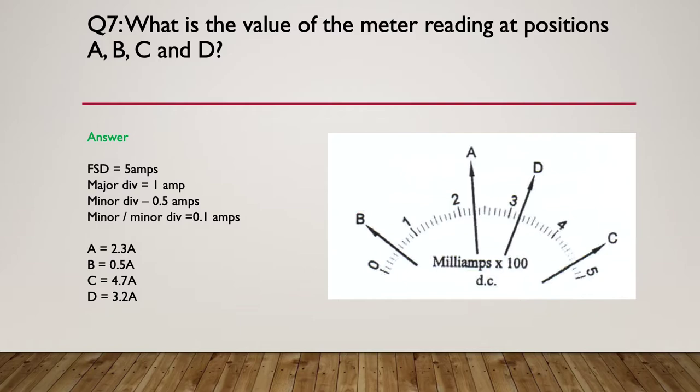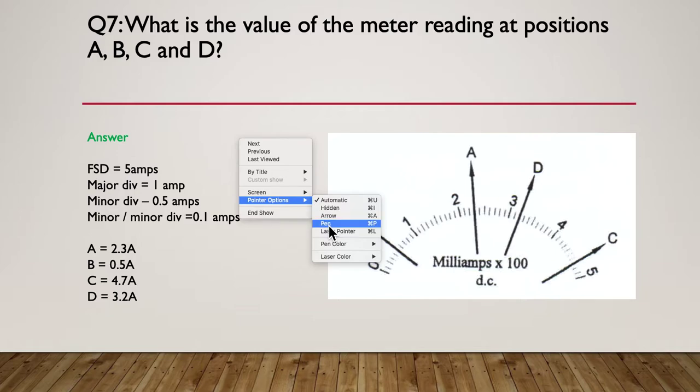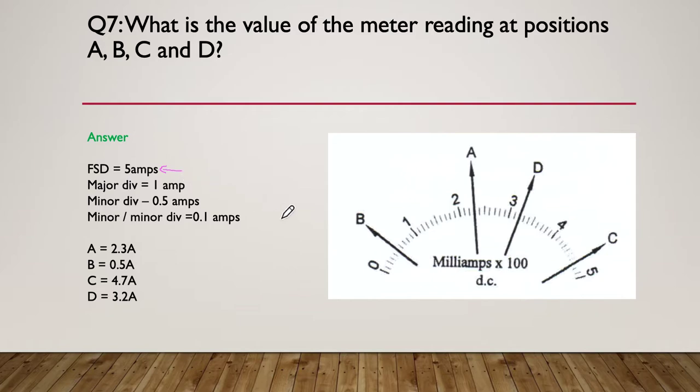And here's our answer. So 5 amps full scale deflection. It's an ammeter so we're measuring in amps. Major divisions: one amp for every major division. Minor divisions where it's every half an amp. And then we had minor minor divisions. So we had minor divisions here, I'll just colour in the minor divisions. There that's every half an amp. You can see them in there. And then of course we had minor minor divisions. So we had another set of even smaller divisions inside those.